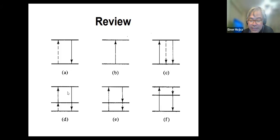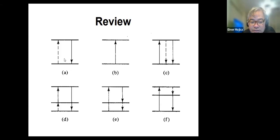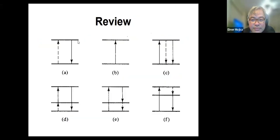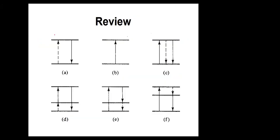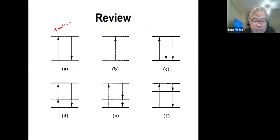The analyte is excited either by thermal, chemical, or other non-radiative processes — that's why you have the dash line. The analyte can return to the lower energy state by emission, so this is an emission or what we call a chemical luminescence.